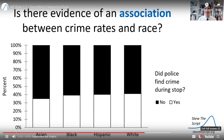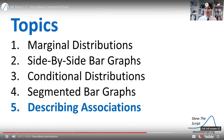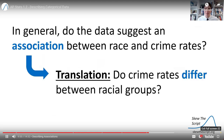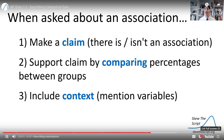One question we might have is: is there any evidence of an association between crime rates and race? Let's talk about how you would answer that on the AP exam. When asked whether data suggests an association between race and crime rates, it means: do crime rates differ between racial groups? When answering an association question on the AP exam, you should do three things: make a claim, support the claim by comparing percentages between groups, and include context by mentioning the variables of the data set.